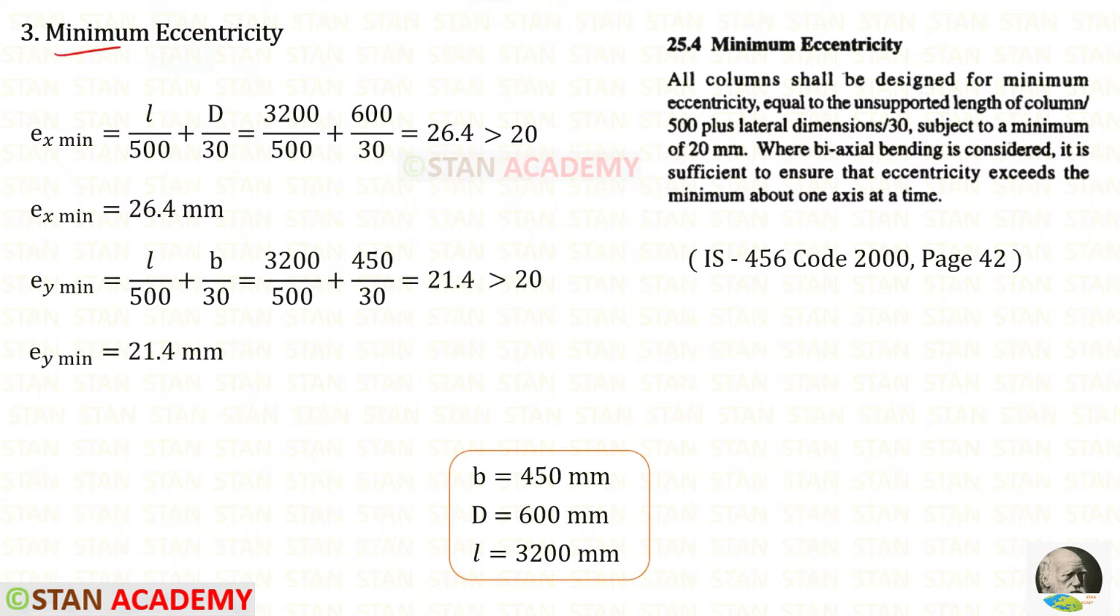Now let us find the minimum eccentricities. We have to open this code book page number 42. The clause 25.4 states that all columns shall be designed for minimum eccentricity equal to the unsupported length of the column upon 500 plus lateral dimensions upon 30 subject to a minimum of 20 millimeter. When we use these formulas, when we find the eccentricity in the x direction we can use the longer side. When we find the eccentricity in the y direction we can use the short side.